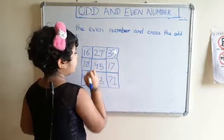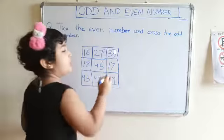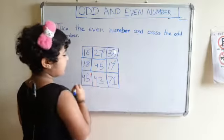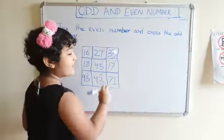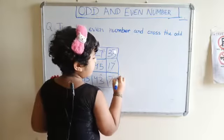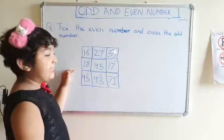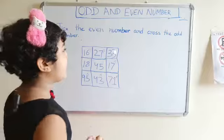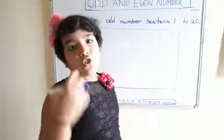45 को cross, 17 को cross, 95 को cross, 43 को cross. 71 के ones place में 1 है, so इसे भी cross लगाएंगे. So, 16 और 18 के ones place में 6 और 8 है, इसलिए ये even numbers हैं और बाकी सब odd numbers हैं.